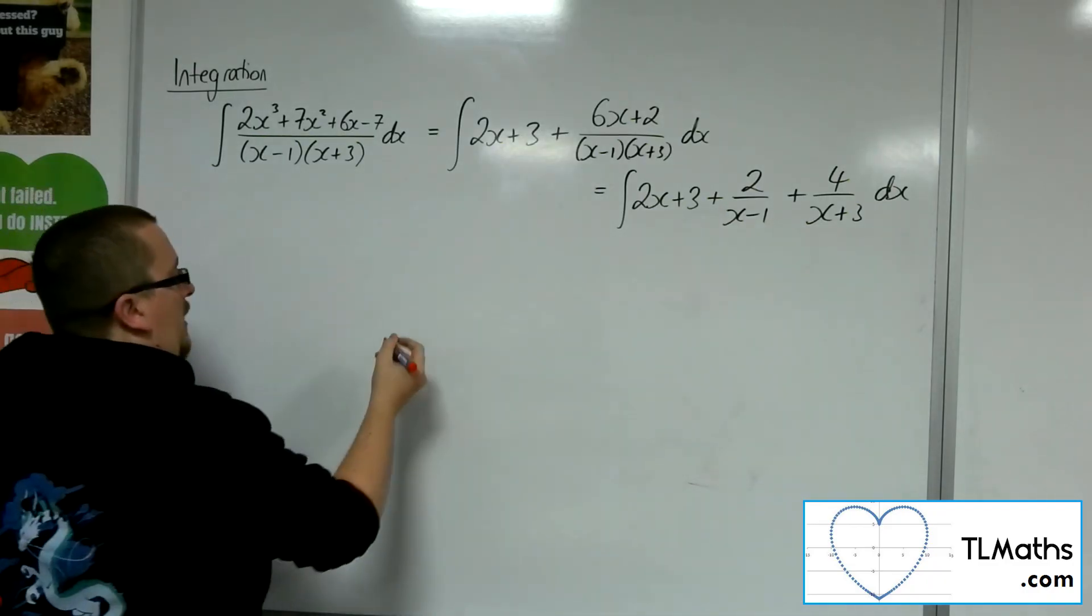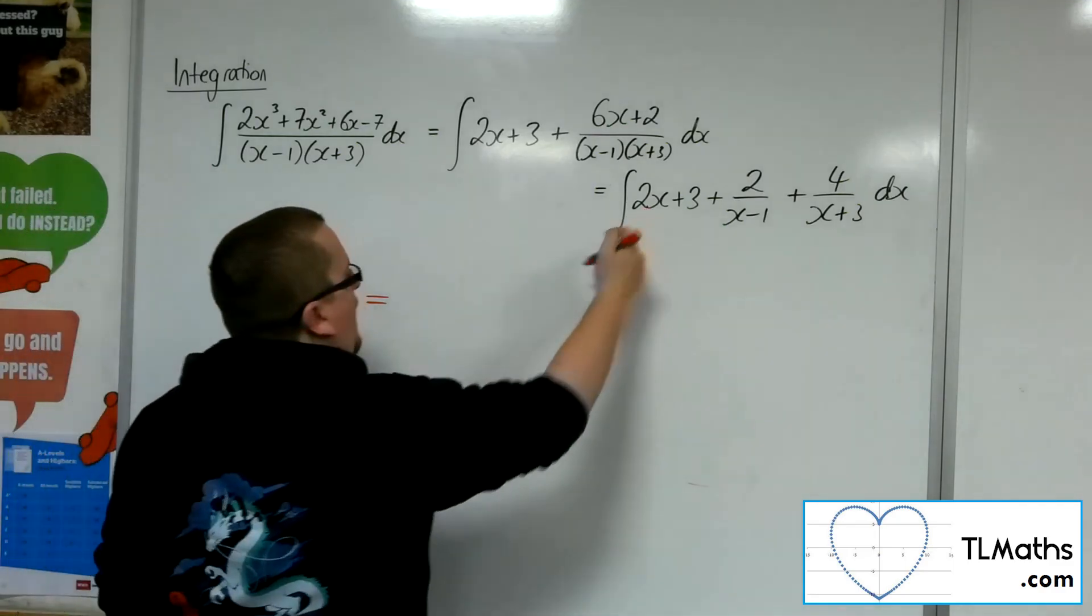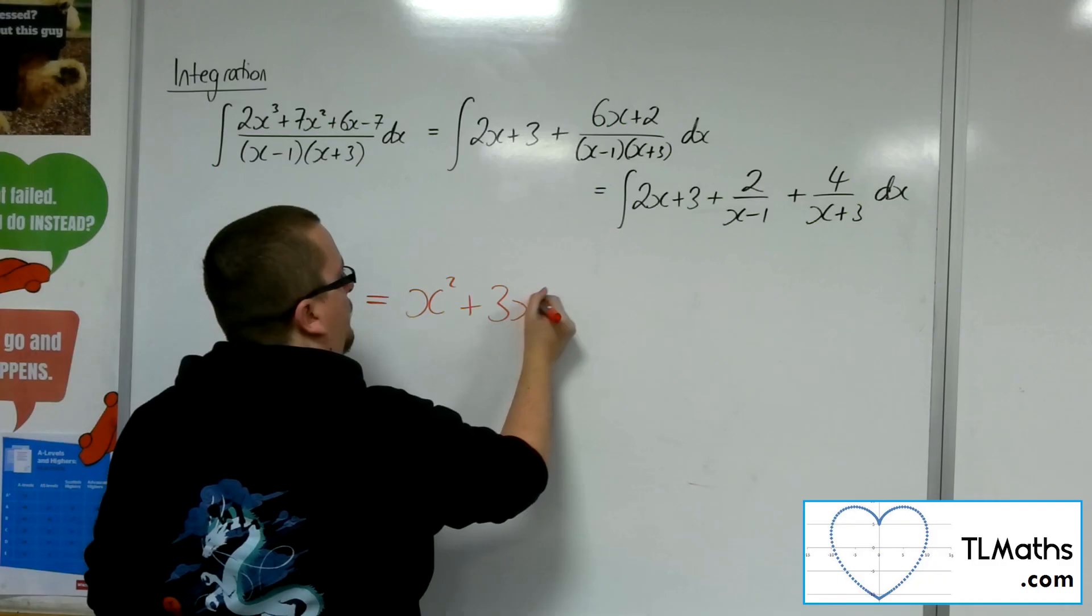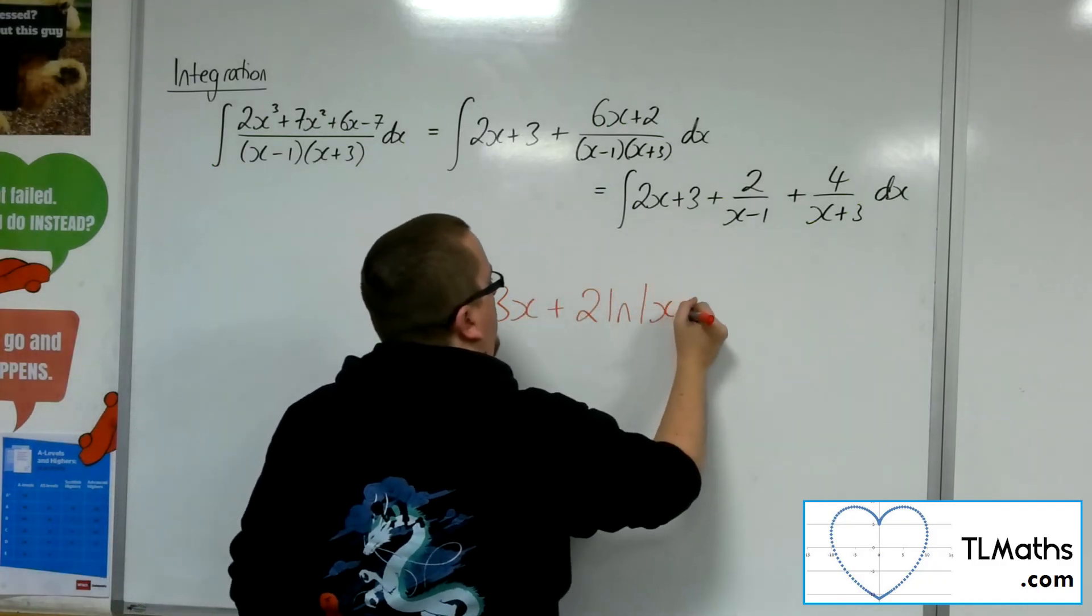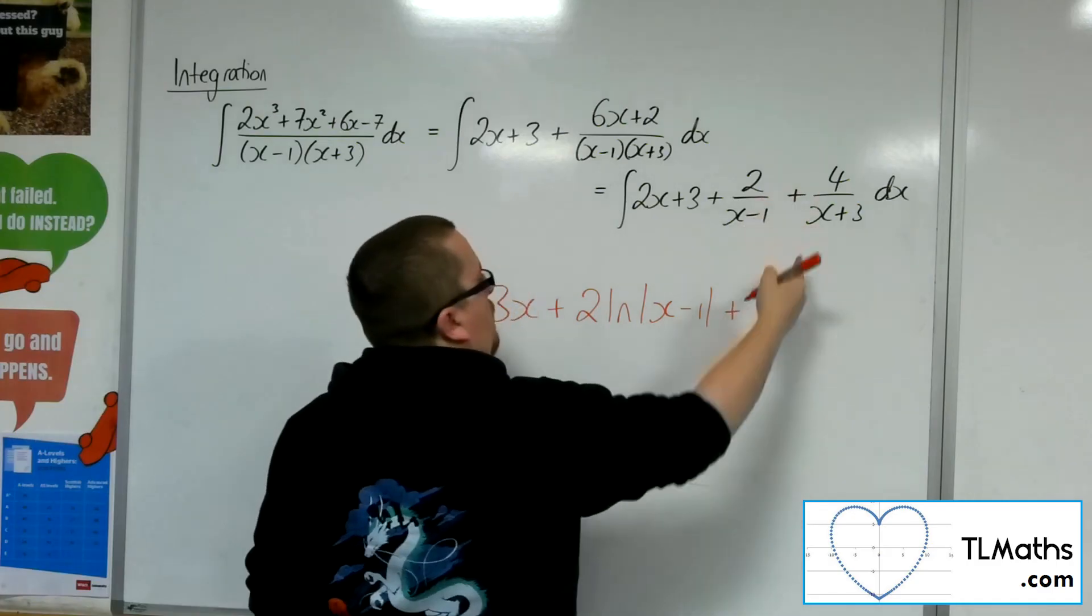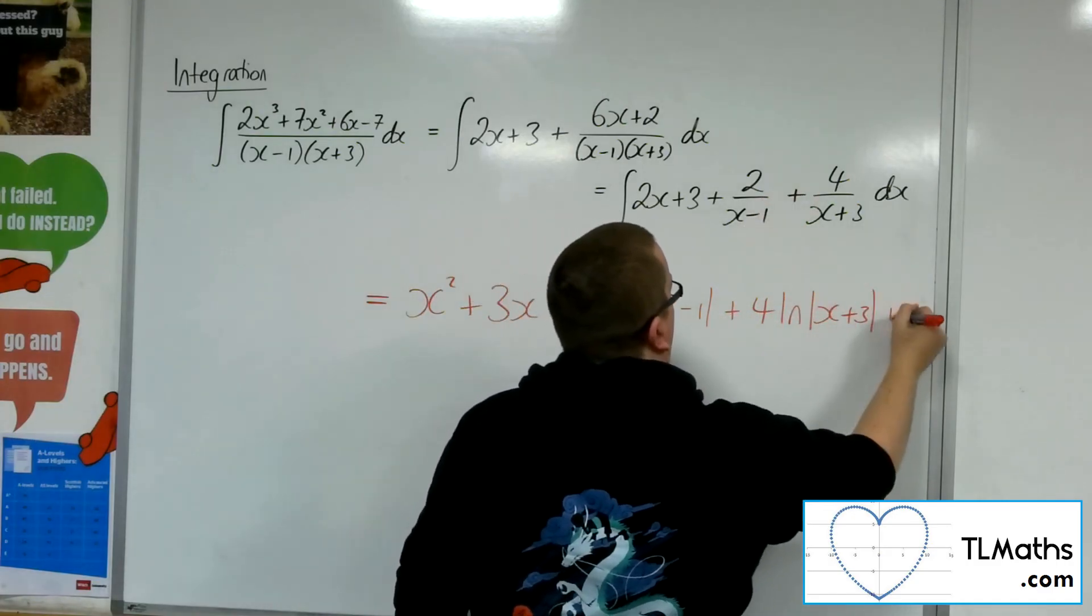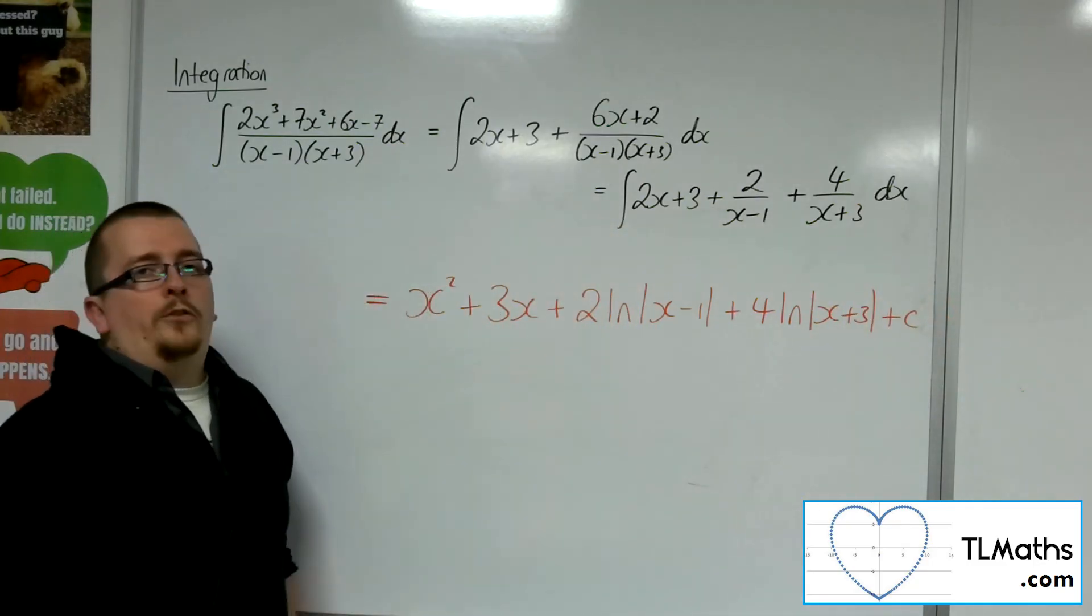So, last line is the actual integration. So 2x integrates to x squared, 3 integrates to 3x, 2 over x minus 1 integrates to 2 log x minus 1, plus 4 over x plus 3 integrates to 4 log x plus 3, plus c constant of integration, and that is the answer we were looking for.